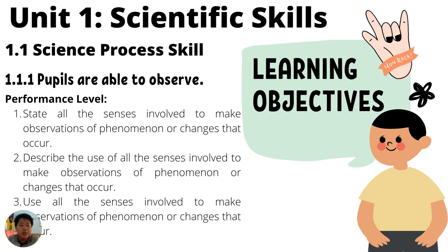So for today, we are going to learn a new unit, which is Unit 1, Scientific Skills. Today we are going to learn Observe. For this video, you are going to cover Performance Level: Number one, state all the senses involved to make observations of a phenomenon or changes that occur. Number two, describe the use of all the senses involved to make observations of phenomenon or changes that occur. And Level 3, use all the senses involved to make observations of phenomenon or changes that occur.